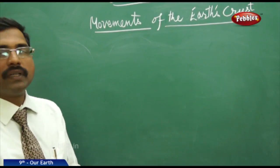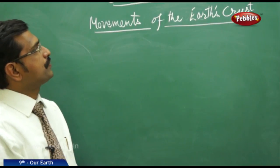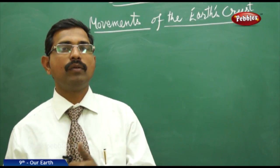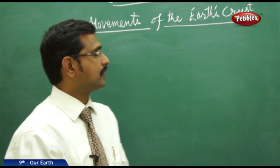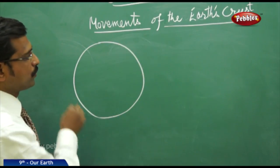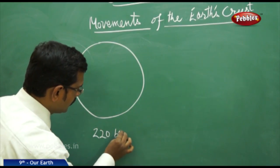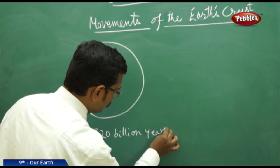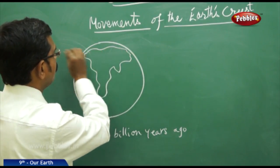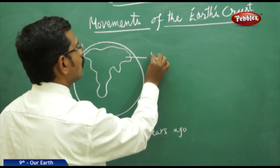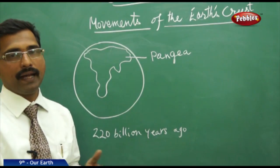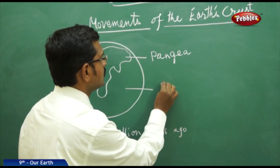Now we'll understand about the movements of the earth's crust. Billions of years ago there was only one land and water. In Greek they call it Pangea, which means 'whole land.' The water surrounding it is called Panthalassa. I'll show you in the diagram how it was around 220 billion years ago.